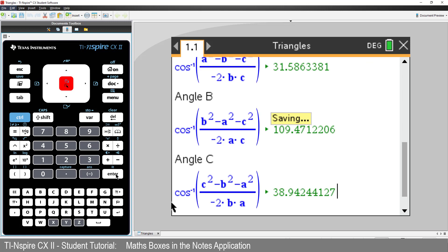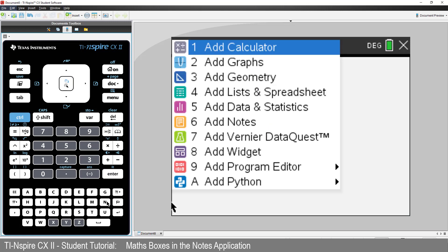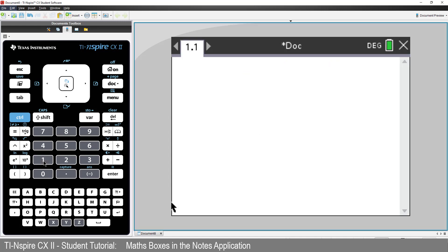I'll start a new document and insert a calculator application. Suppose you're right in the middle of some calculations and then you need to determine the angle inside a triangle of known side lengths. Press CTRL and I.